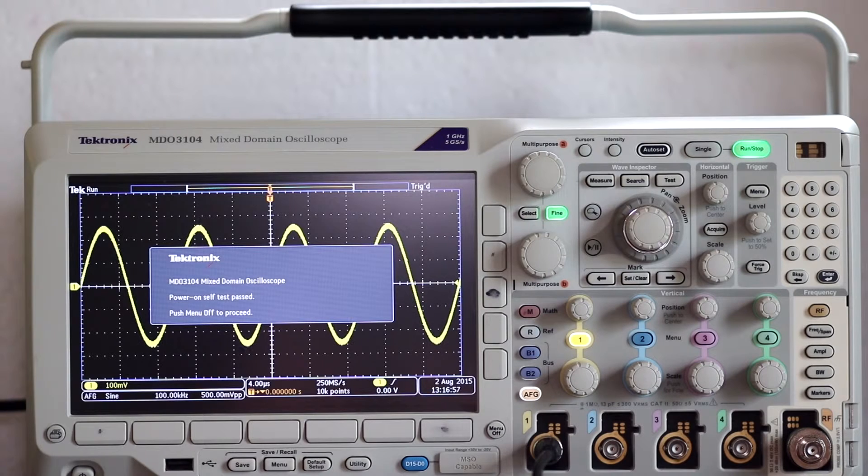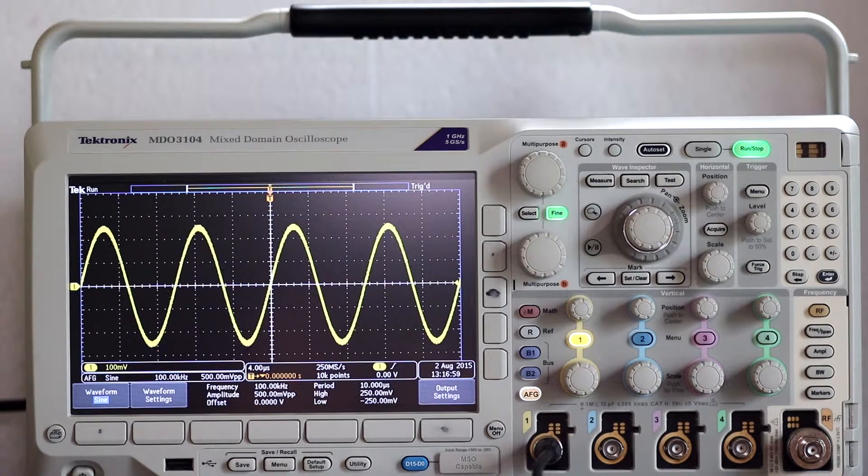If that is the case, press waveform, the first soft key on the left below the display, and using multipurpose knob A, select SINE. Press MENU OFF to get a clear view of the display.